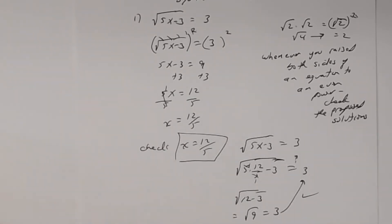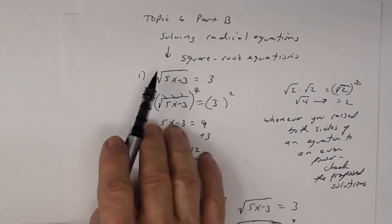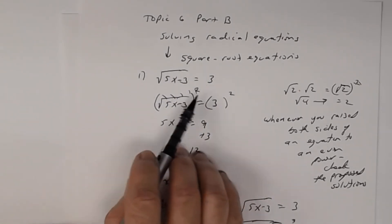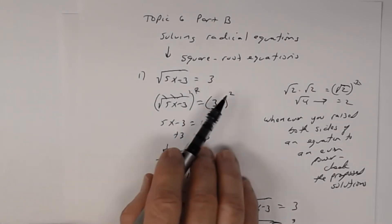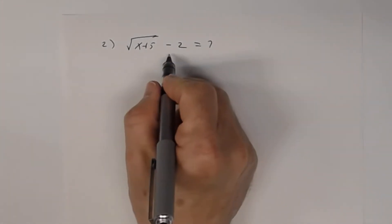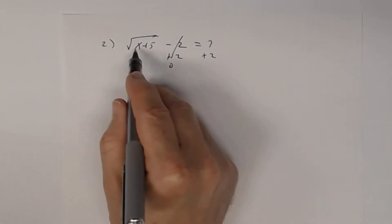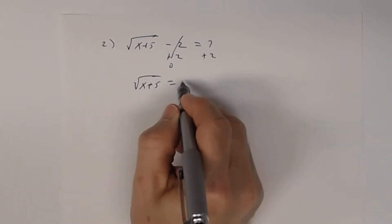Number 2: we have the square root of x plus 5, minus 2, equals 7. Before raising both sides to the second power, we need to get the radical by itself. So add 2 to both sides: the square root of x plus 5 equals 9. Now this looks like the previous problem.